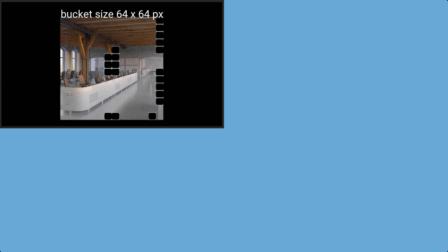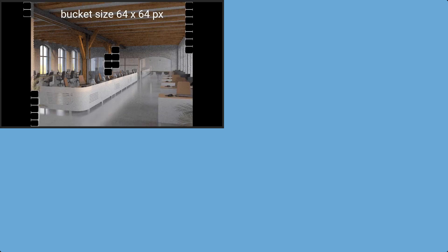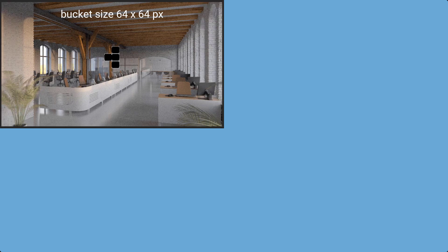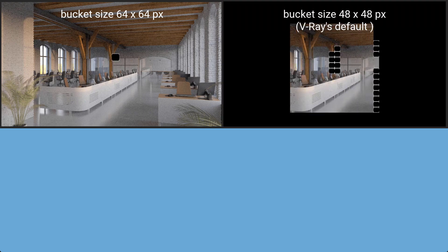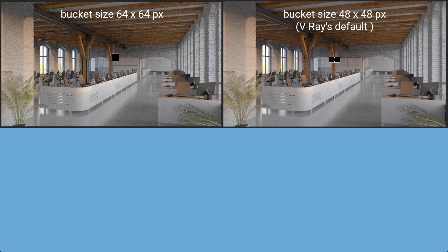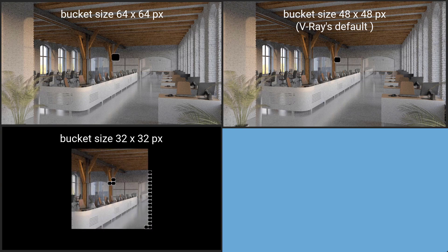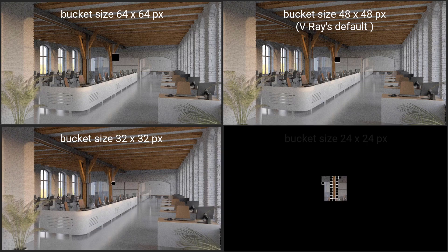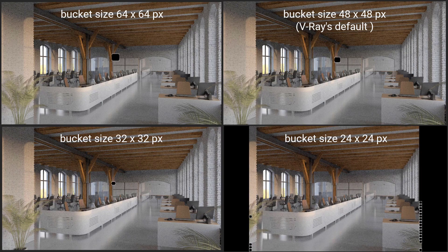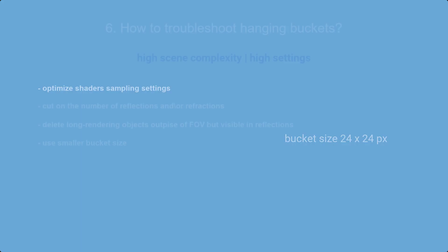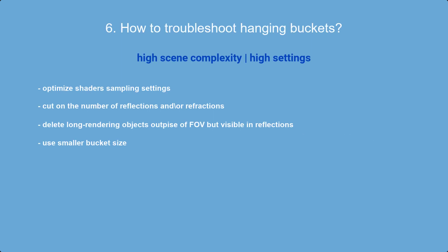Here is an example scene with hanging buckets. I reduce the bucket size until the hanging issue is resolved. Starting at 64 pixels I get hanging buckets, then 48 pixels (the default in V-Ray 4) — still hanging. At 32 pixels it's better but still not enough. At 24 pixels the problem is solved. The smaller the bucket, the better — however, you lose the efficiency benefit of larger buckets.